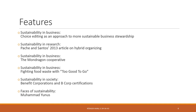We have a sustainability in society feature on benefit corporations and B Corp certifications — about regulating social enterprises and providing a dedicated legal form in some countries. Finally, there's a feature about Muhammad Yunus, a prominent figure in sustainability who won the Nobel Peace Prize together with his Grameen Bank. Have fun with this chapter!